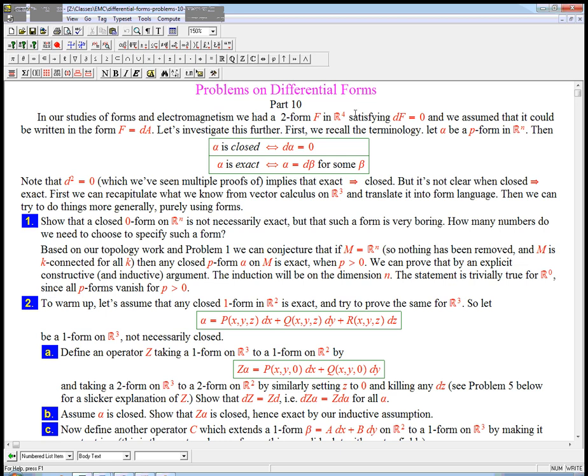So another motivation is we have actually seen a two-form in R4. That's going beyond the usual vector calculus story. It satisfied df equals zero. It was closed. Here I have a reminder of that terminology. The closed just means d of that is equal to zero. And it was really useful to connect with what's called a vector potential in electromagnetism, that it could be written in the form f equals dA, where A is a one-form on four dimensions. And so that means that it's exact.